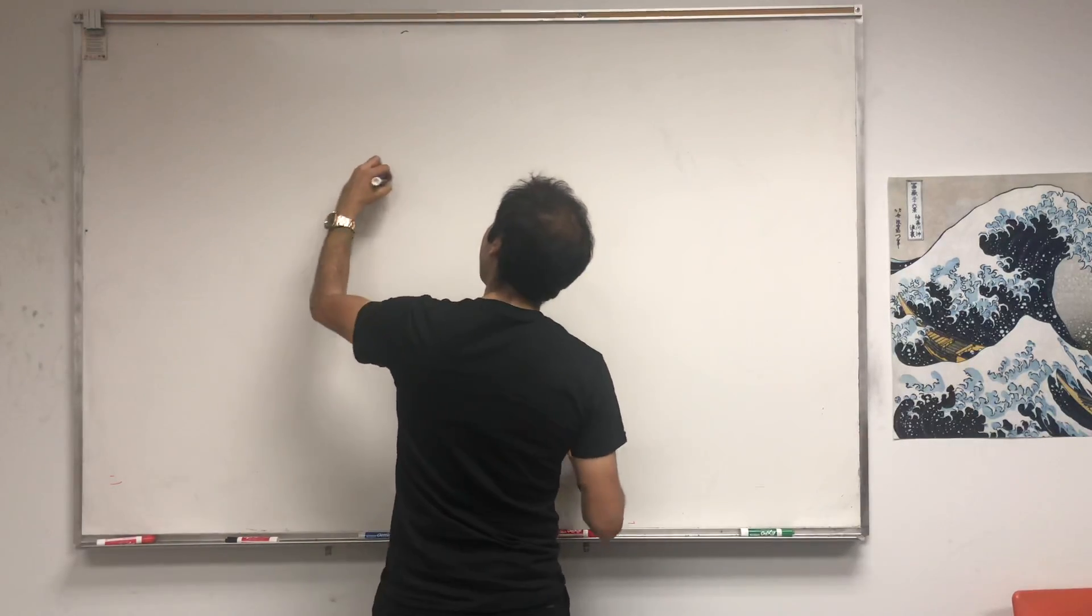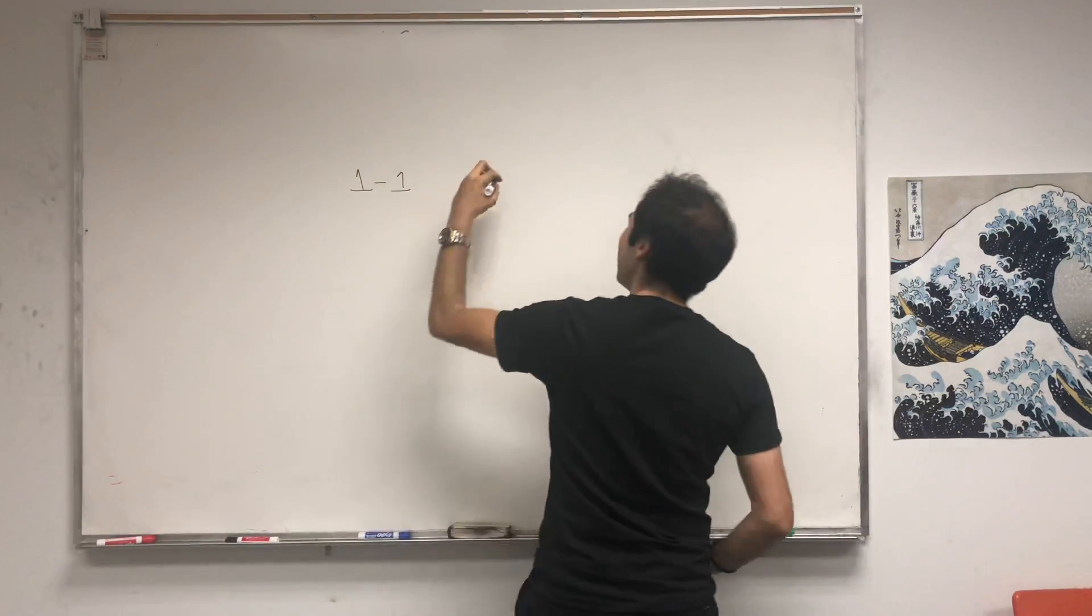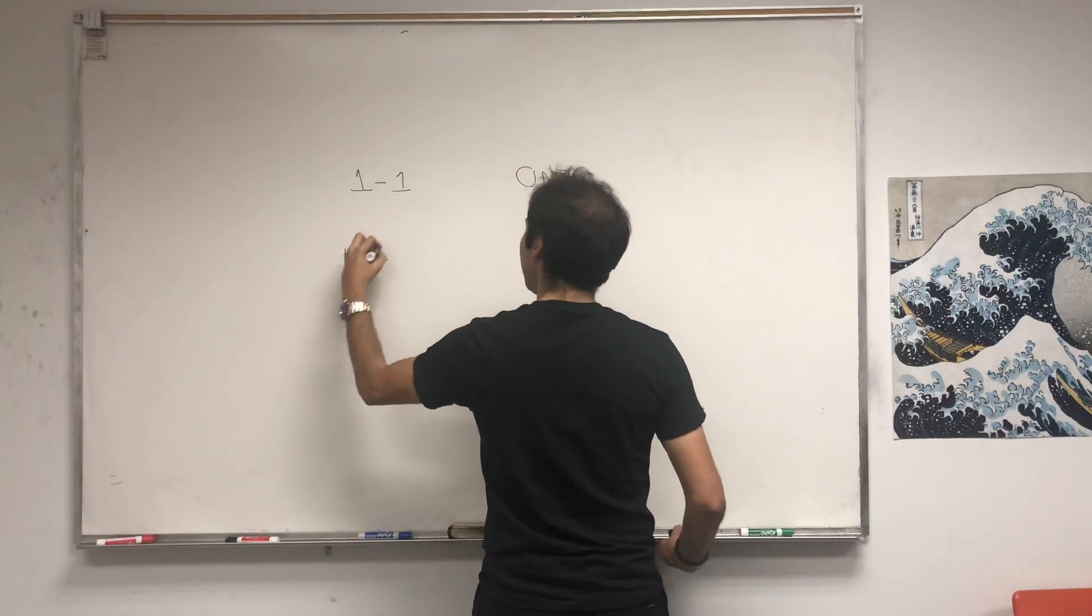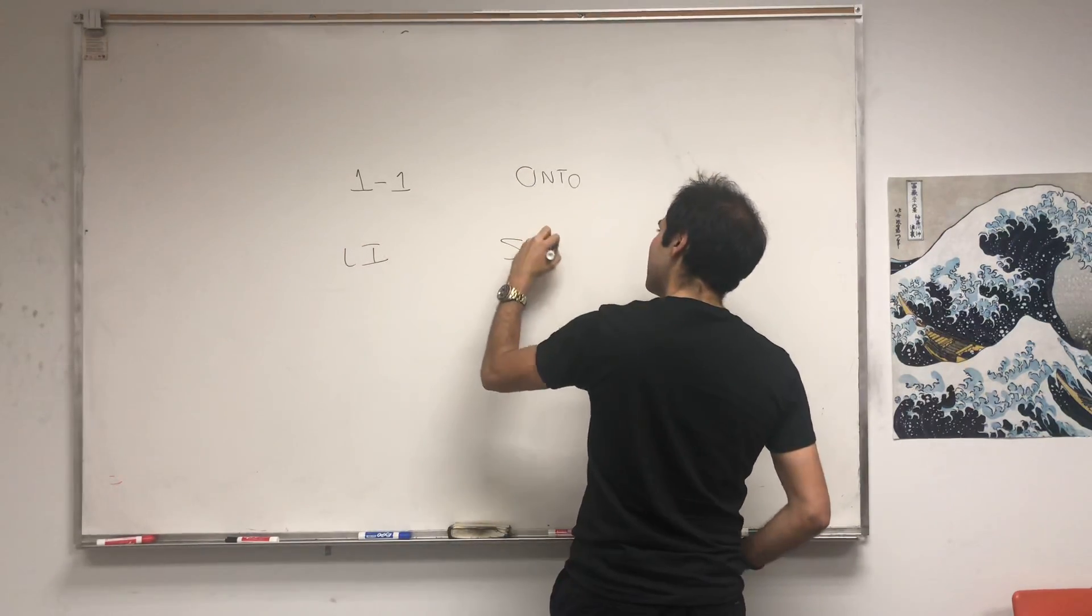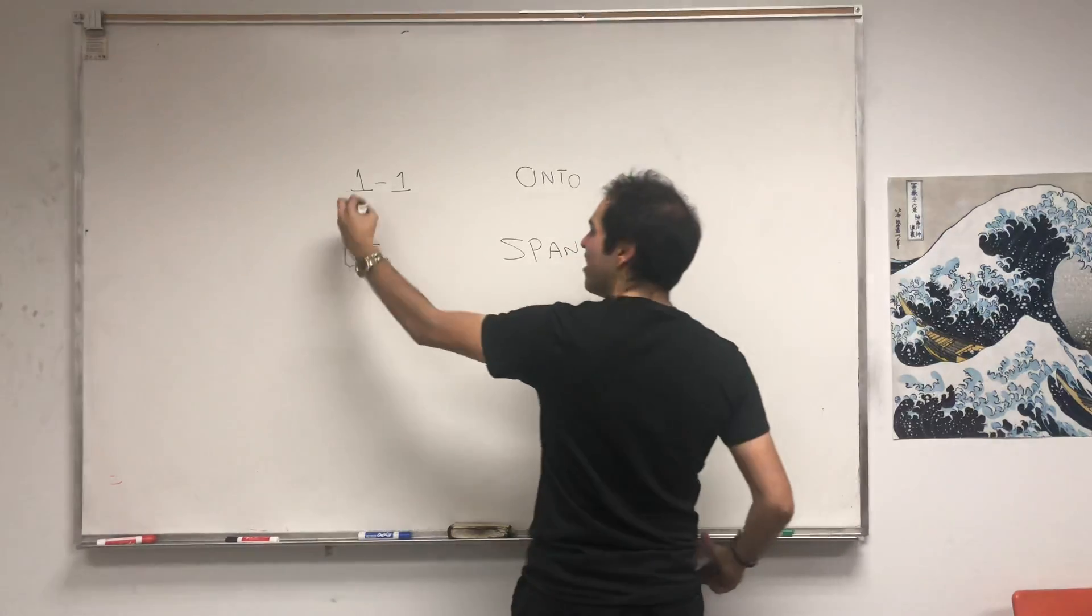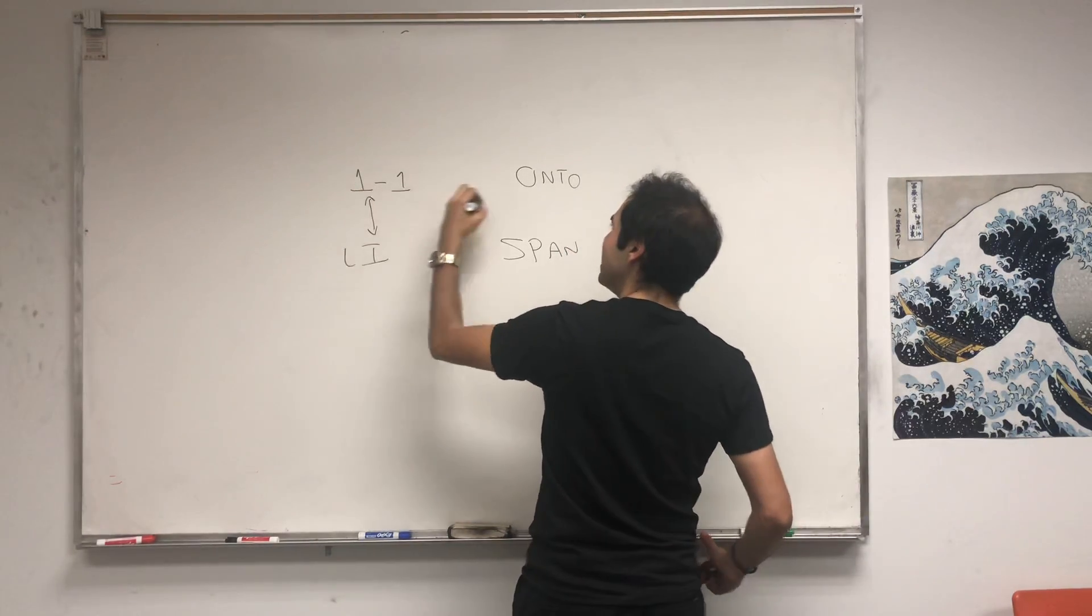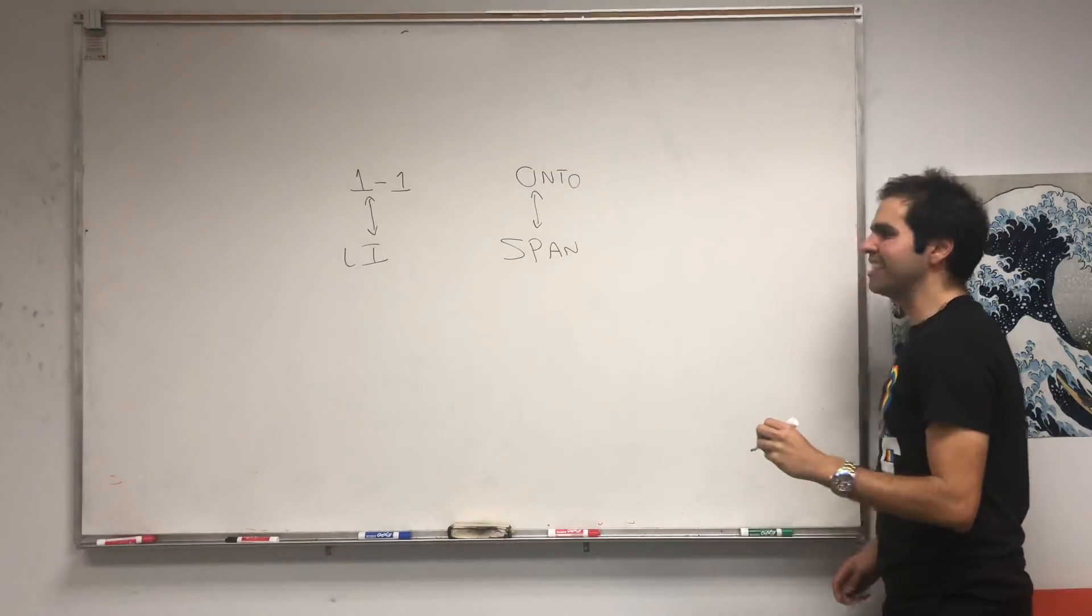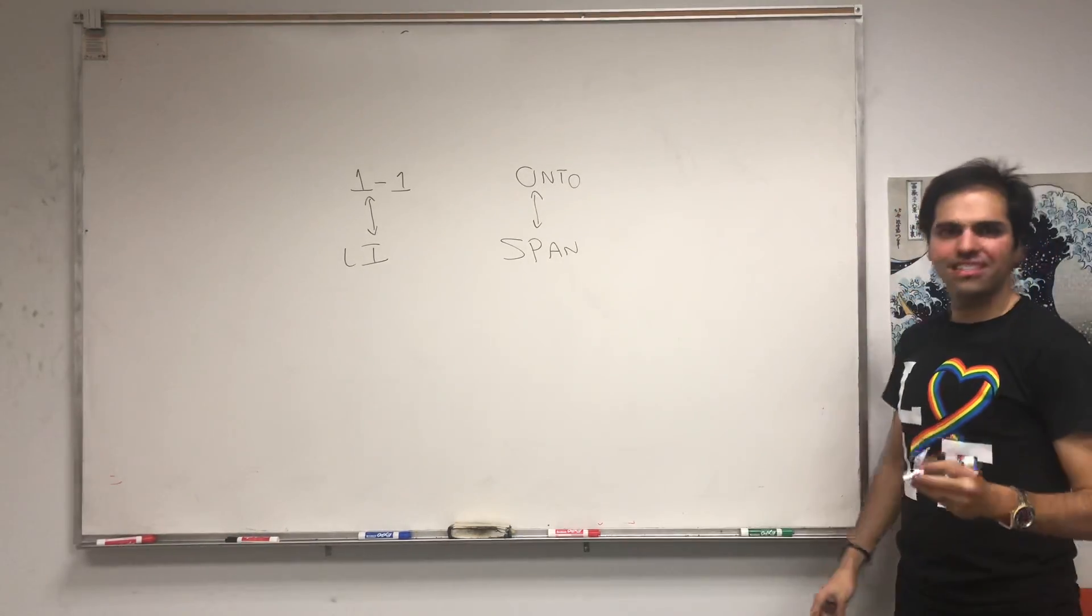And it turns out a bunch of those topics are related. There's this very nice relationship between one-to-one and linear independence, and onto and span.